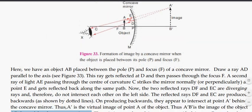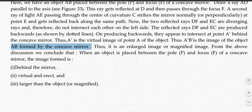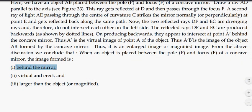The image properties we see are: Number 1, behind the mirror. It is virtual because it's made with dotted lines where rays don't actually reach. It's erect, and larger than object, meaning magnified.